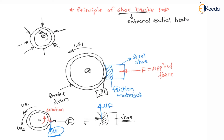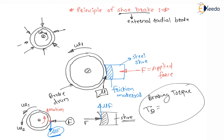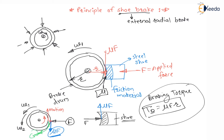The braking torque Tb — we have to find this braking torque. If the radius of the drum is R, and on the drum the friction force mu·F is in the downward direction at radius R, then the braking torque is: Tb = mu·F·r. This braking torque acts in the clockwise direction, while the disc is rotating in the anticlockwise direction. Because of this braking torque, the speed is decreasing.